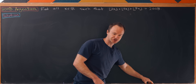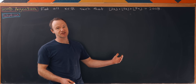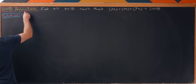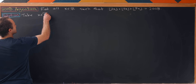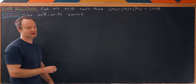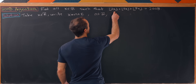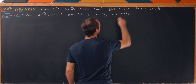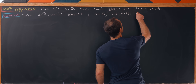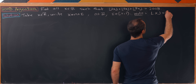Our strategy will be to decompose any real number x into its integer part and its fractional part. We take x in ℝ and write x as n plus ε, where n is an integer and ε is a number between 0 (inclusive) and 1 (exclusive). Under this setup, the floor of x is equal to n.